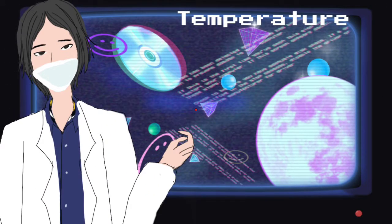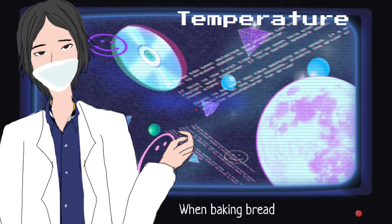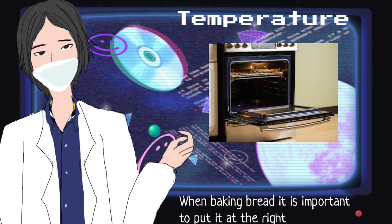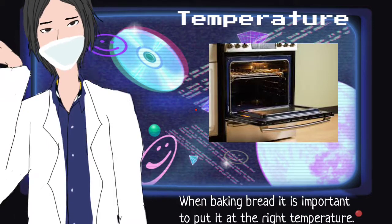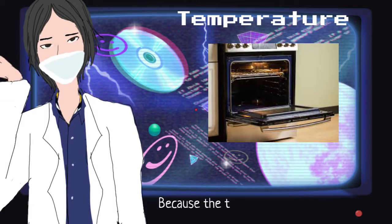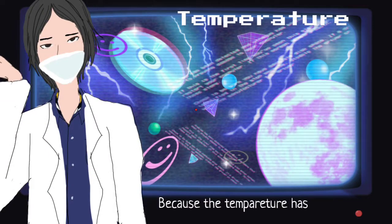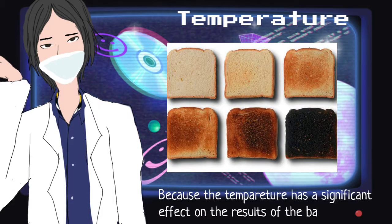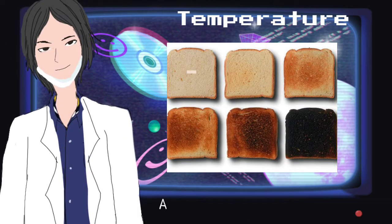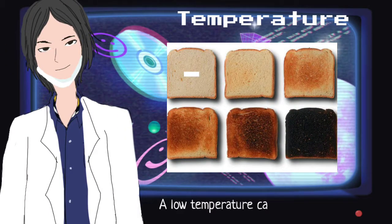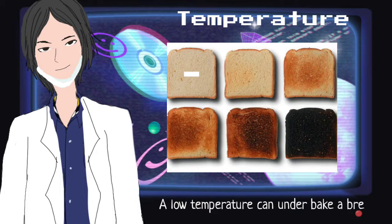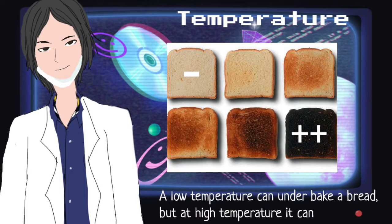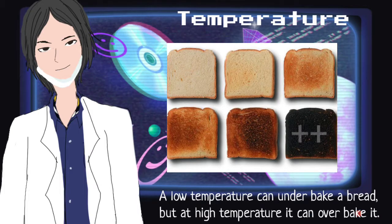Temperature. When baking bread, it is important to put it at the right temperature, because temperature has a significant effect on the results of the baked bread. A low temperature can underbake a bread, but a high temperature can overbake it.